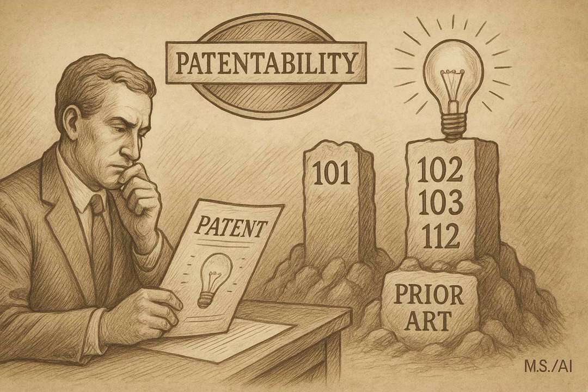During examination, the examiner gives claim terms their broadest reasonable meaning consistent with the description in your application. This wide interpretation can sometimes make a claim look more like it's directed to an abstract idea or cover more ground than you intended, so claim drafting is key. Moving on to utility: the MPEP clarifies it needs specific and substantial utility — a well-defined, real-world, practical benefit. You can't just patent a chemical compound saying it might be useful for something someday.